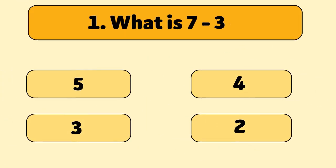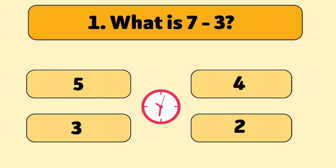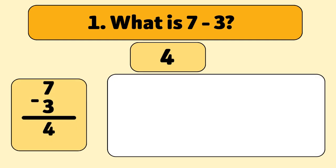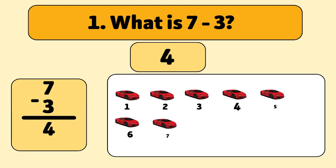What is seven minus three? The answer is four. We start with seven cars and take away three. Let's count. One, two, three. You're doing amazing.